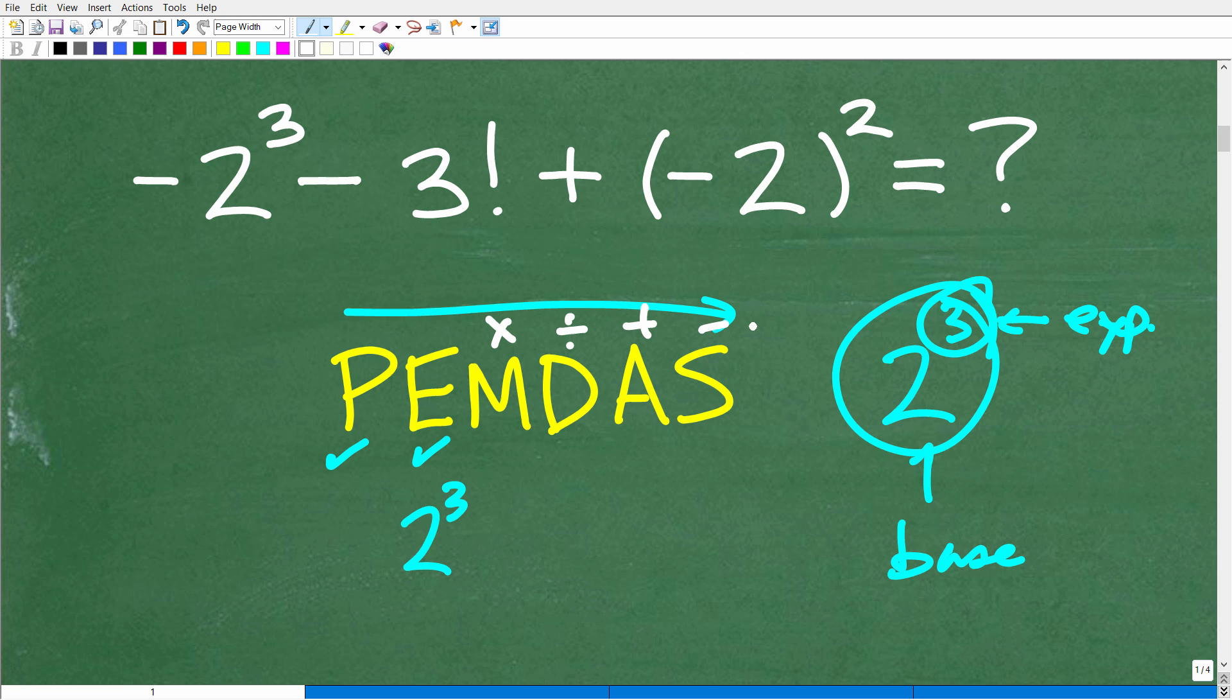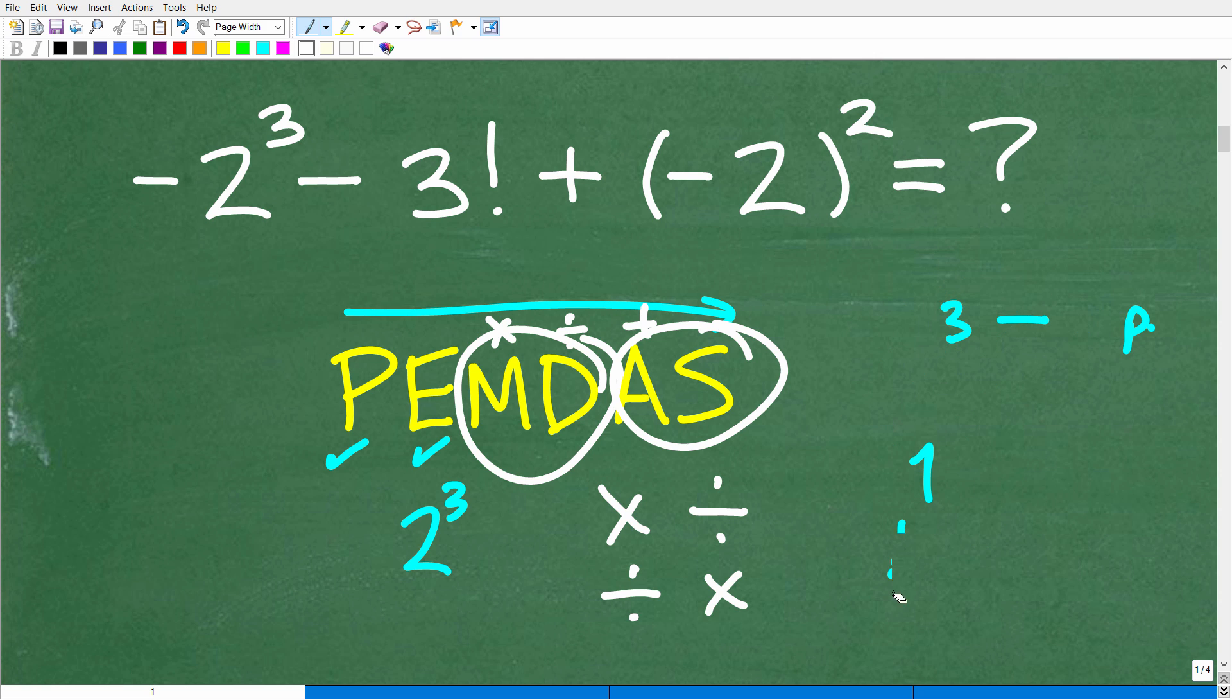This is another huge area of confusion for the order of operations. Most students think, oh, I have to do all multiplication no matter what first and then division, but it's not the way it works. M and D is multiplication or division, whatever you see first from left to right. This is a very commonly confused part of the order of operations. And A and S is the same thing, addition and subtraction works the same way, whatever you see from left to right.